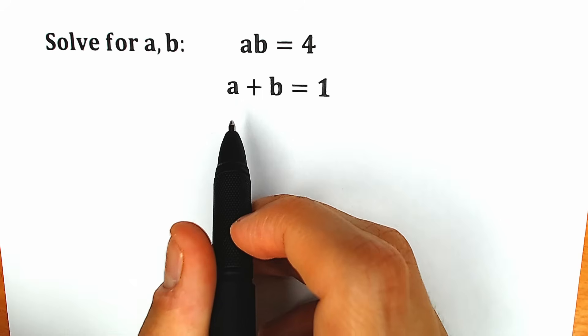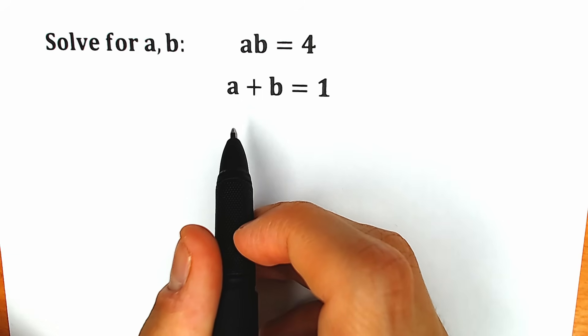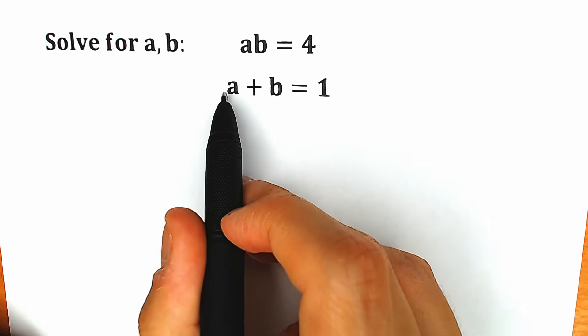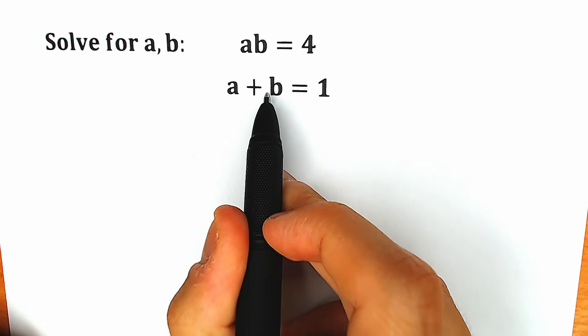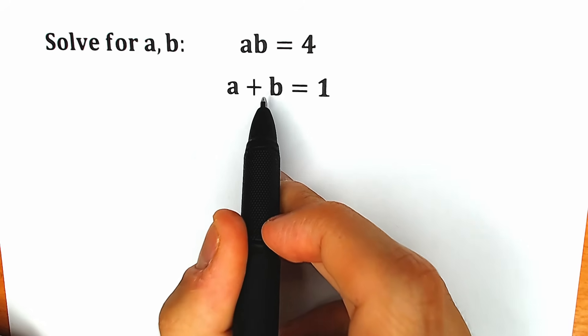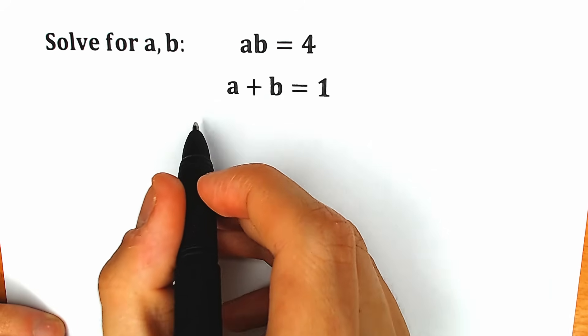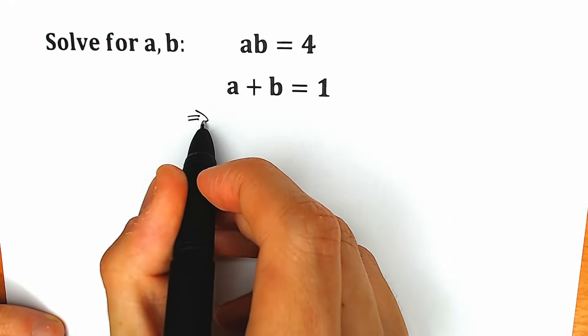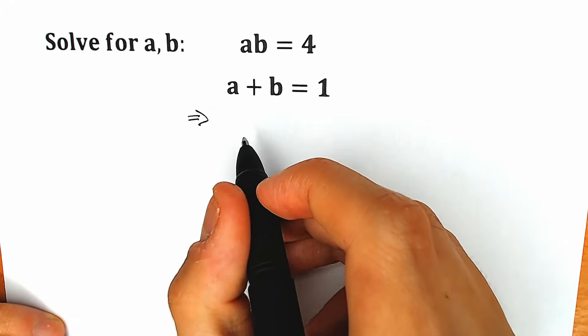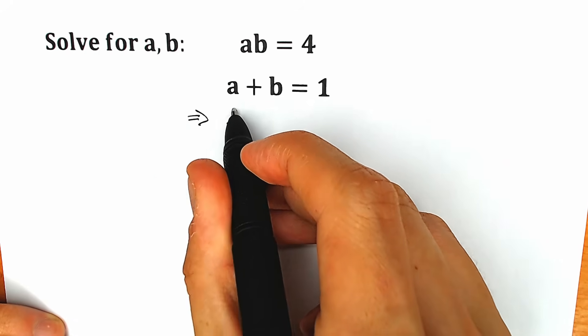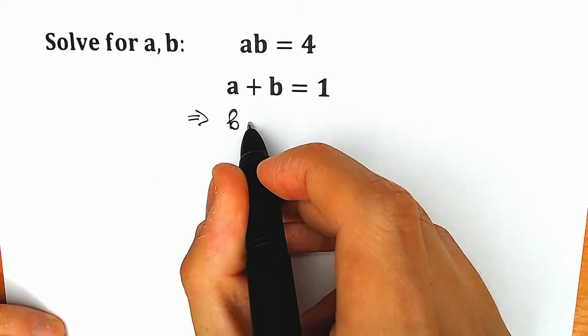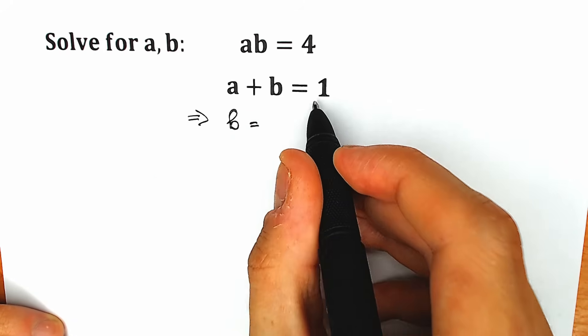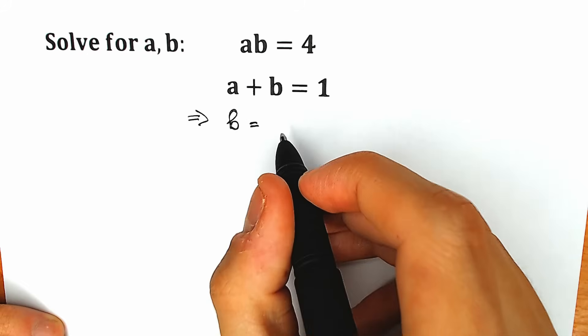So this is like a basic system of equations. From this second equation let's express our b. Our first step is to express b, so b equals 1 minus a.